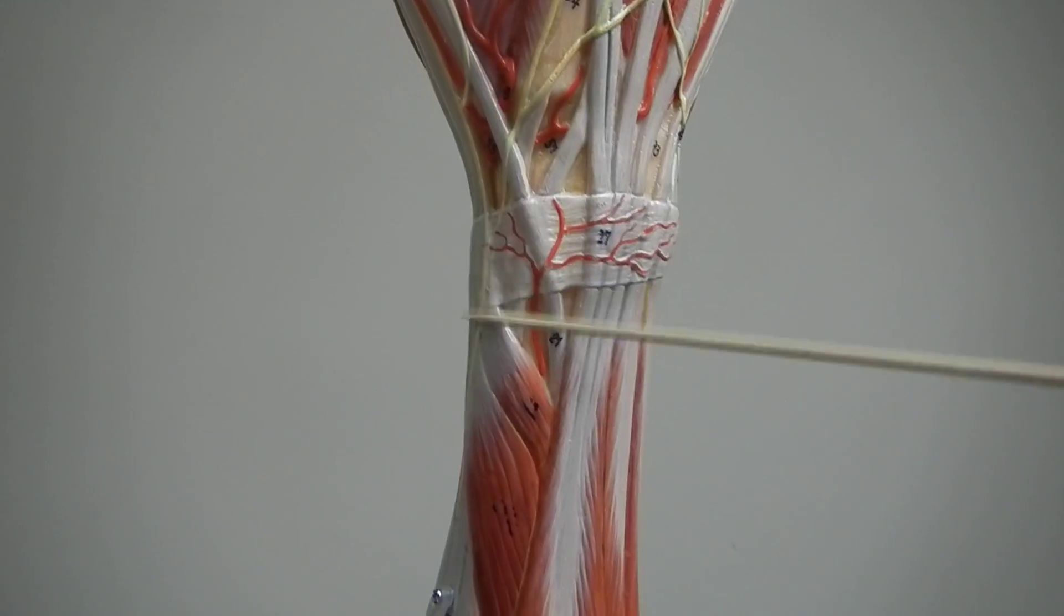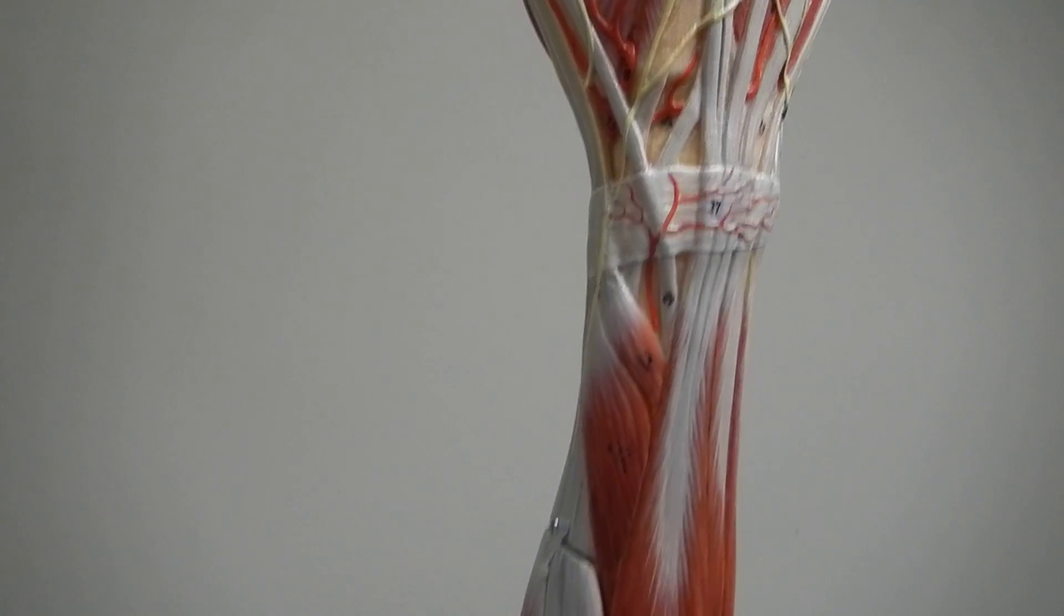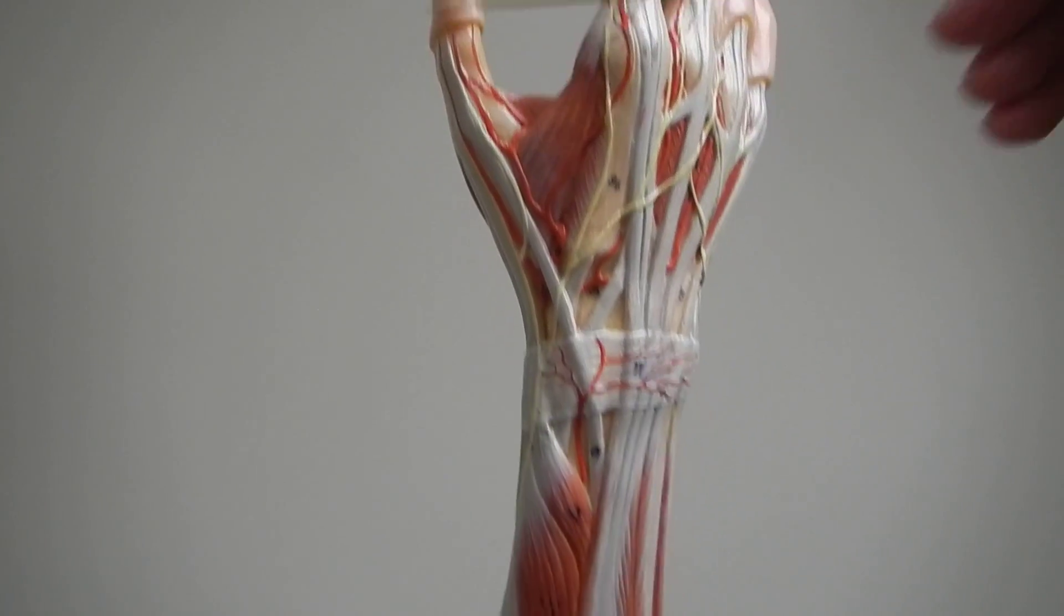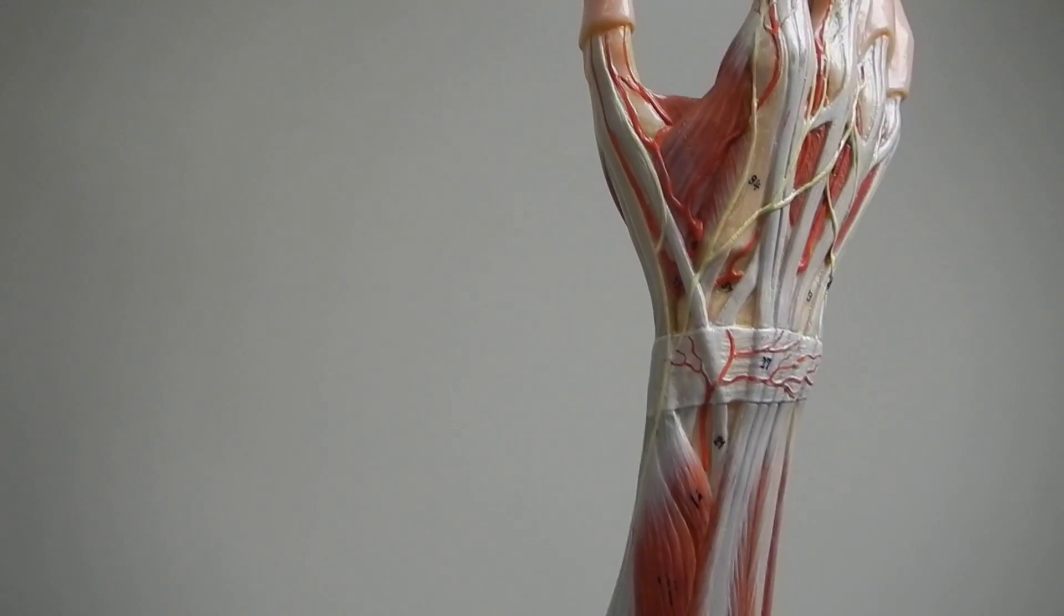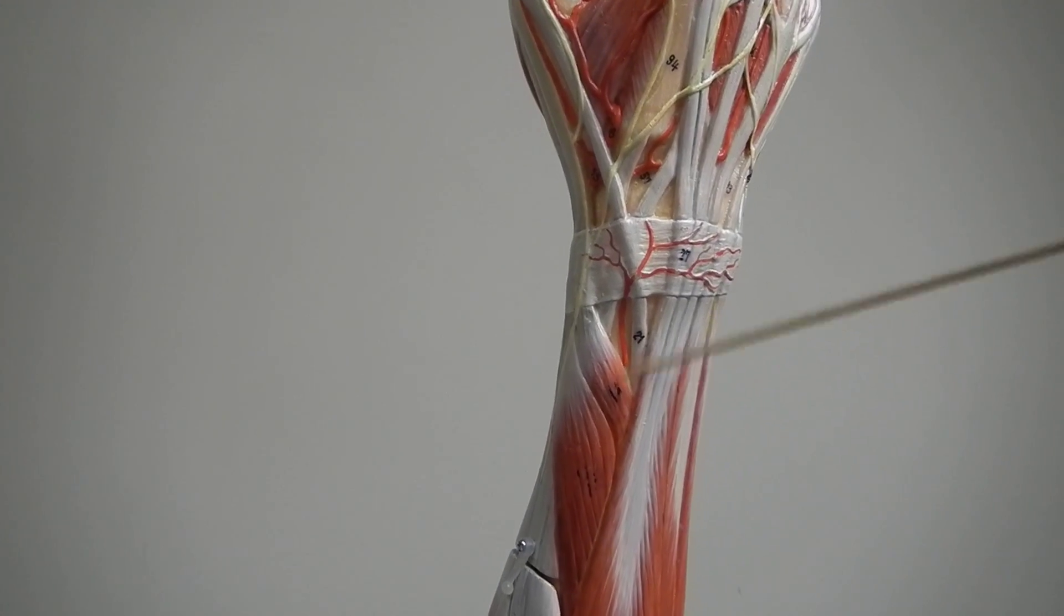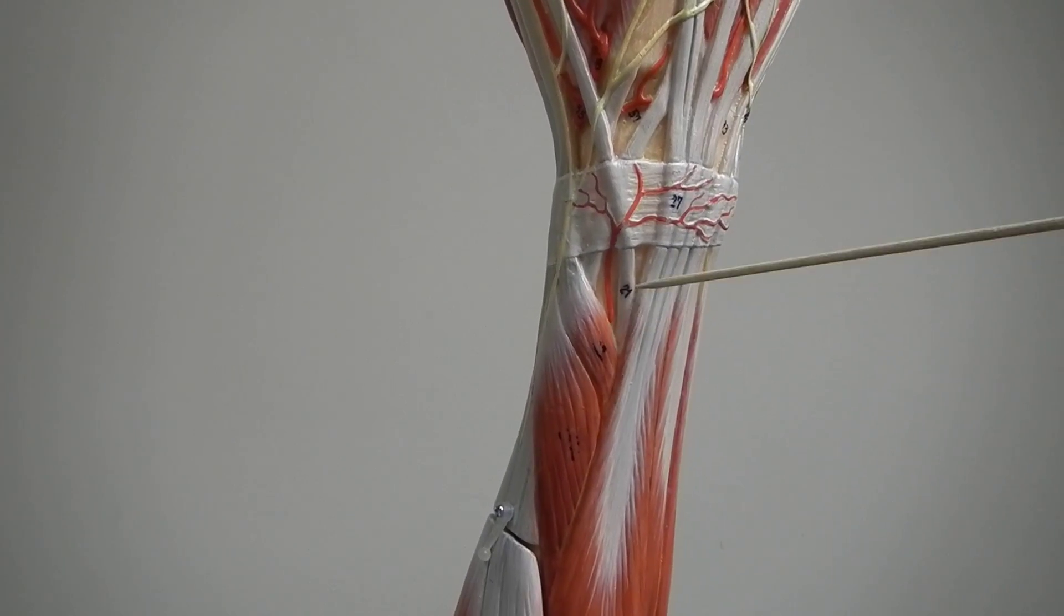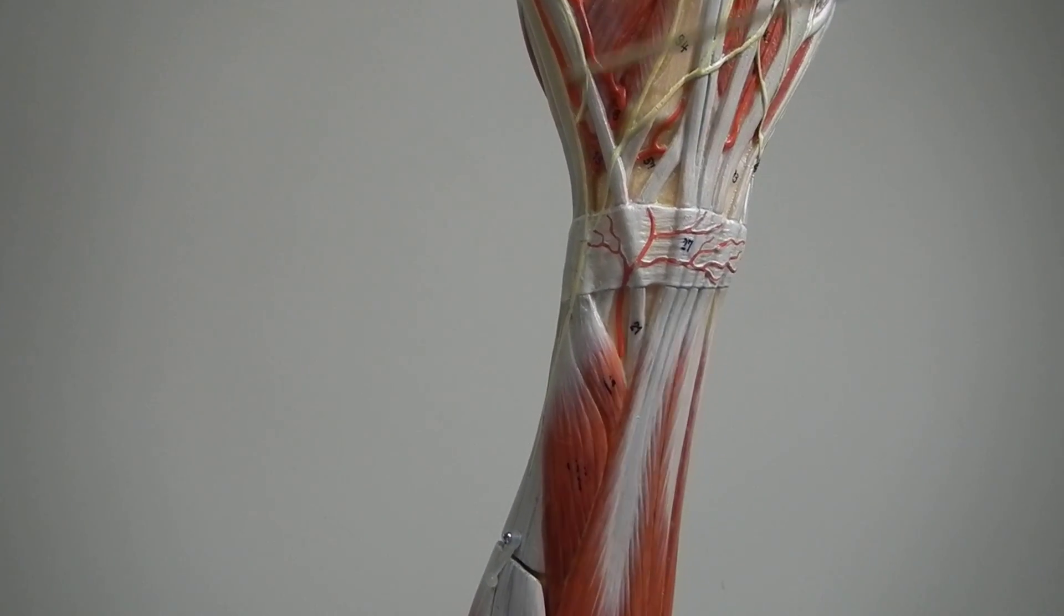We have three smaller ones right here that work with the thumb, and that should be the name, pollicis should be in its name. So we have abductor pollicis longus, extensor pollicis brevis, and extensor pollicis longus.